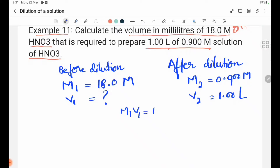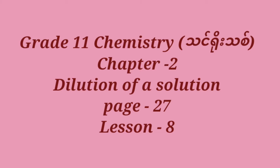M1 V1 equals M2 V2. Grade 11 Chemistry, Chapter 2, Page 27. Dilution of a solution. Lesson 8.